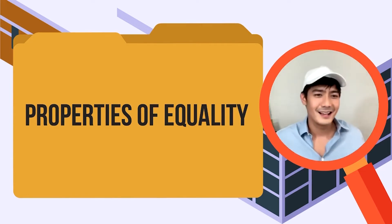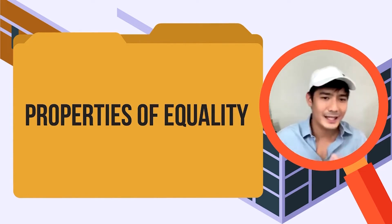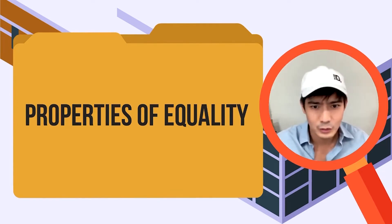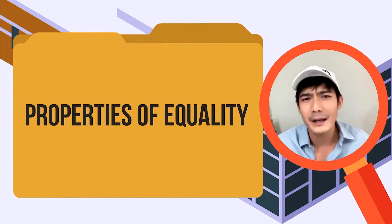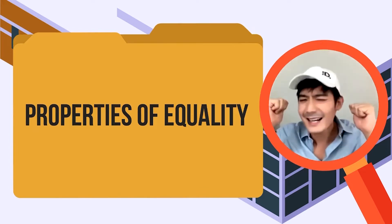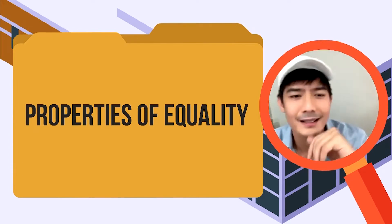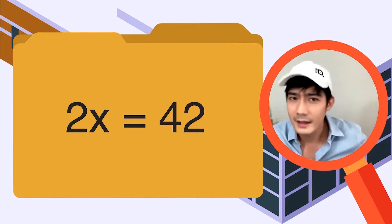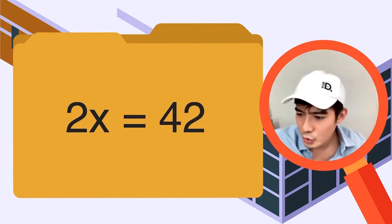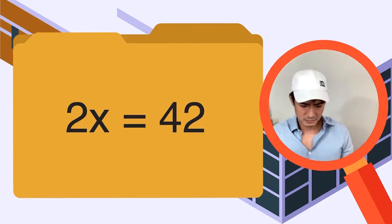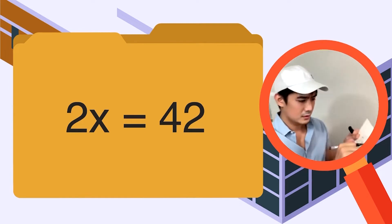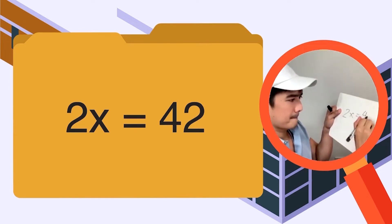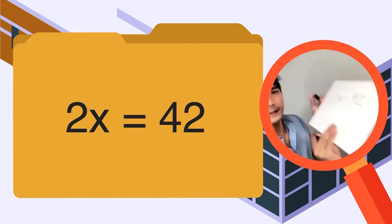Halos pareho lang sa ating Addition at Subtraction Property — diba? — na ginawa natin like 2 weeks ago. Nagpalit lang tayo ng operation. Pero kayang-kaya niyan. Subukan nga natin gamitin ng property. Let's solve for the unknown. We have: 2x is equal to 42. Yan ang ating equation ngayon.